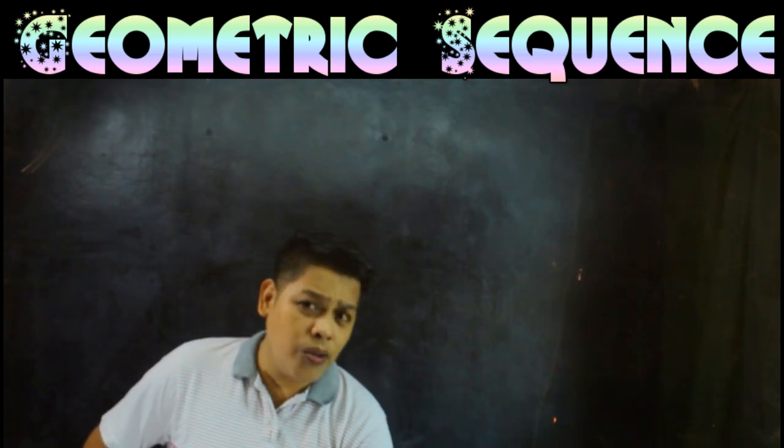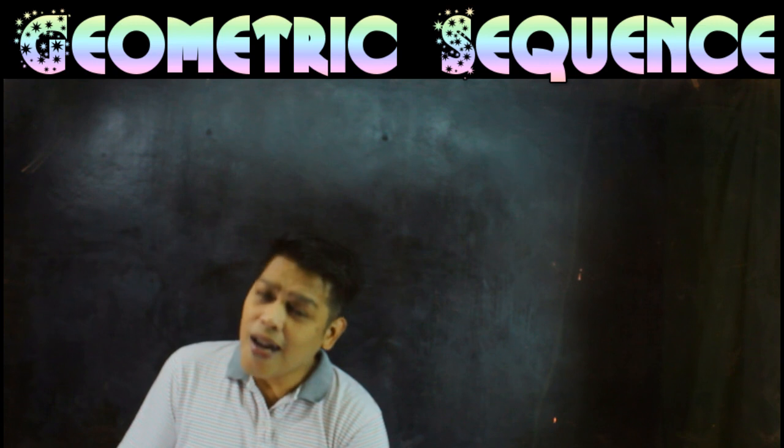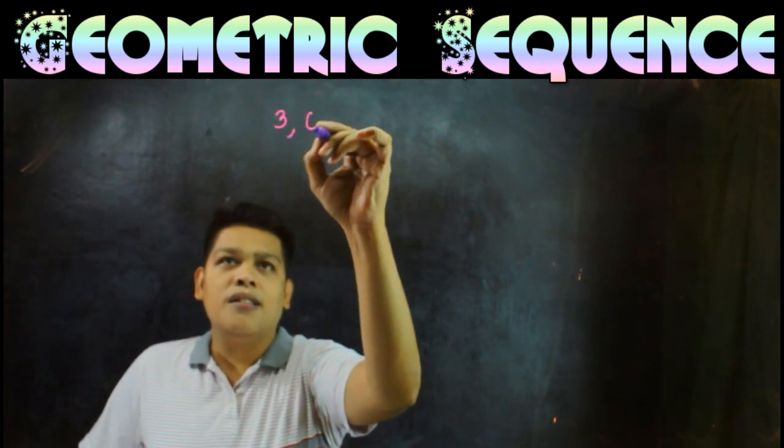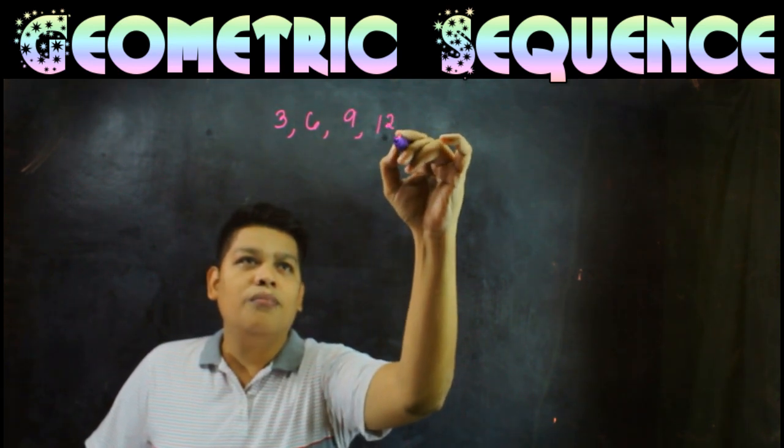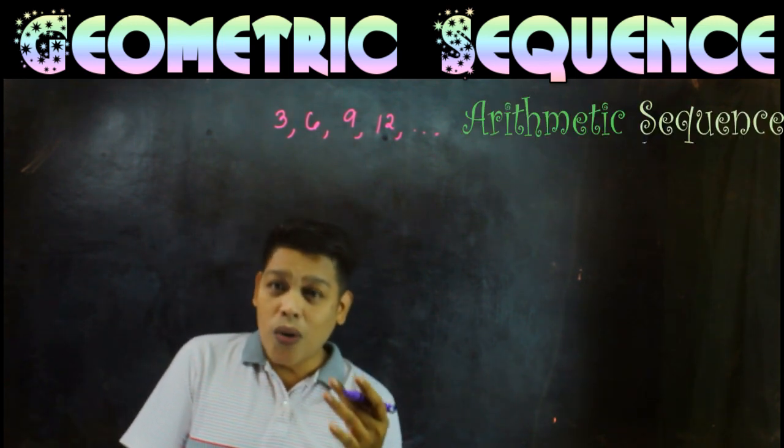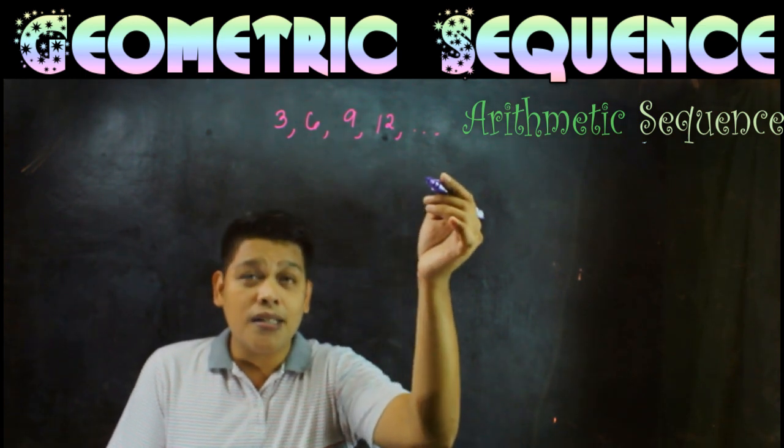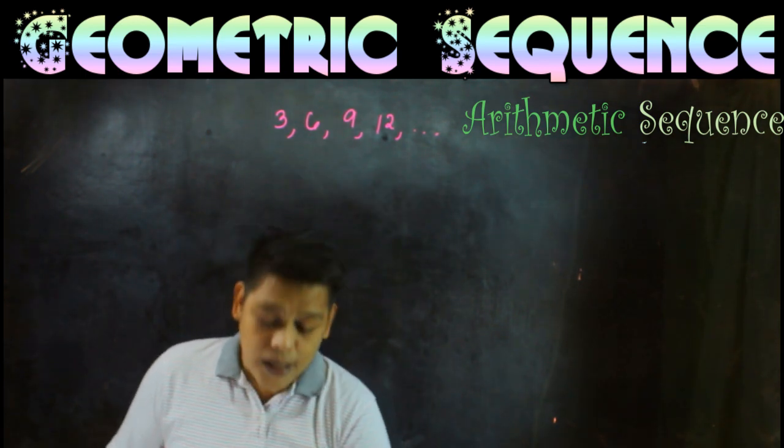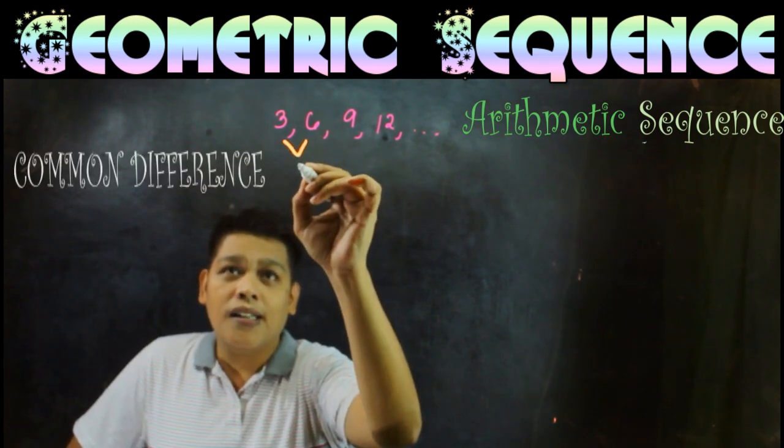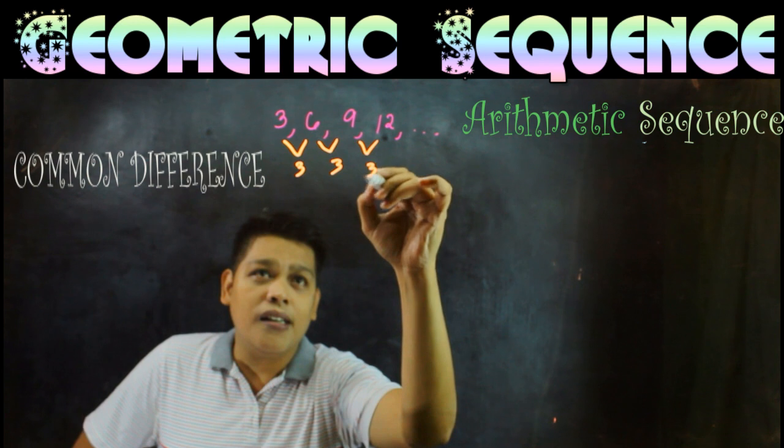So how do we differentiate geometric sequence from arithmetic sequence? For example, I have a sequence 3, 6, 9, 12. This is an example of arithmetic sequence. Why? Because in arithmetic sequence, you add the common difference. When 3 became 6, you added 3. When 6 became 9, you added 3. And 9 to 12, you added 3.